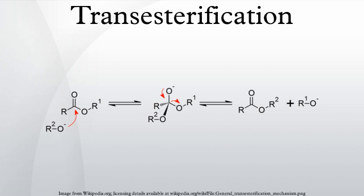In the transesterification mechanism, the carbonyl carbon of the starting ester undergoes nucleophilic attack by the incoming alkoxide to give a tetrahedral intermediate, which either reverts to the starting material or proceeds to the transesterified product.